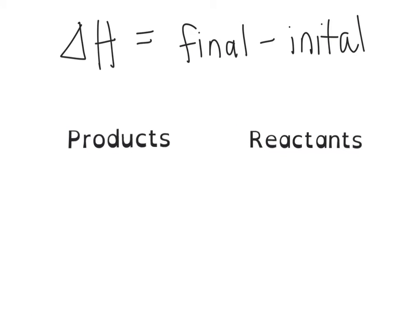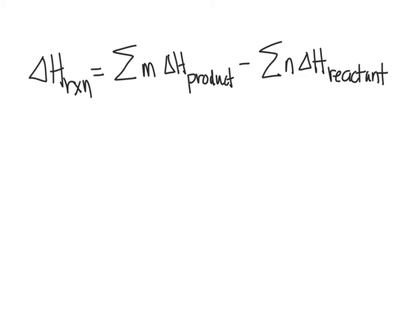Remember delta H, delta means the change. So we are looking at the final minus the initial. In a chemical equation, the final things are the products and the initial things are the reactants. So you're going to consider the products minus the reactants. We find the delta H of the reaction by taking the sum of all the delta H of the products minus the sum of all the delta H of the reactants. The terms M and N are the coefficients.